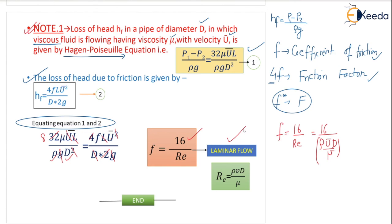F equal to 16 by Re is valid for laminar flow only. For turbulent flow it will be different — very very important relation. Reynolds number Re equals rho V D by mu, where mu is dynamic viscosity. You can also write it using kinematic viscosity nu as V D by nu. First you have to find whether the flow is laminar or turbulent before applying this formula.